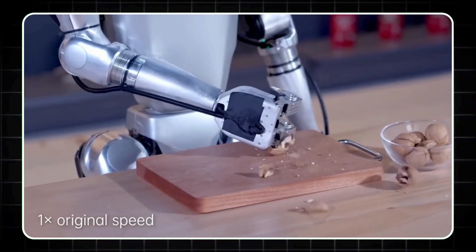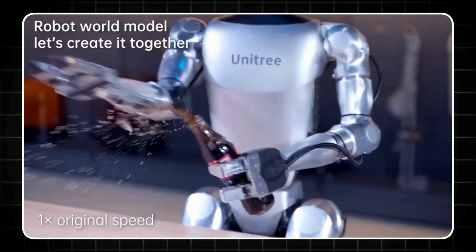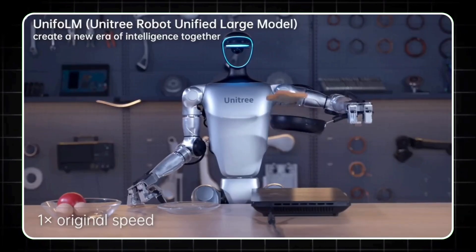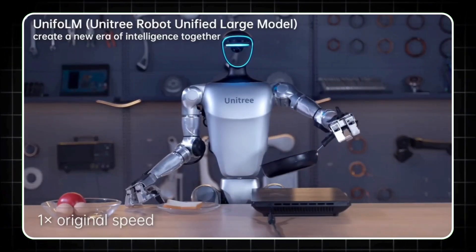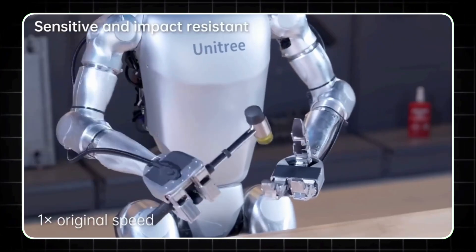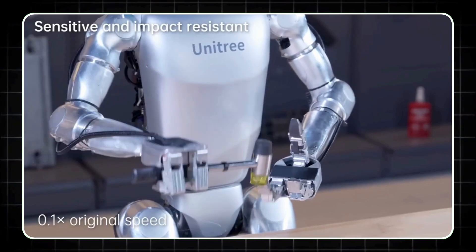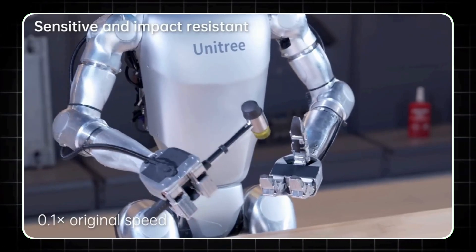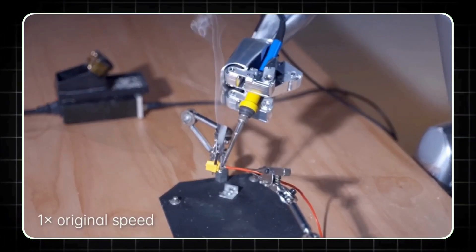Unitree G1 is focused on security and inspections, making it a valuable asset in monitoring and maintaining safety in various settings. With plans for future enhancements in dexterity, the G1 is set to become an even more versatile tool for industries that require both mobility and precision.